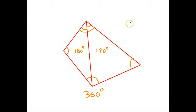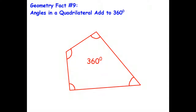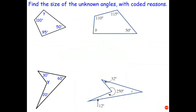That gives us our next geometry fact, which is geometry fact number nine: angles in a quadrilateral add to 360 degrees. It doesn't matter what shape it is — if it's a quadrilateral, the four angles must add to 360 degrees. Let's do a couple of questions based on that.